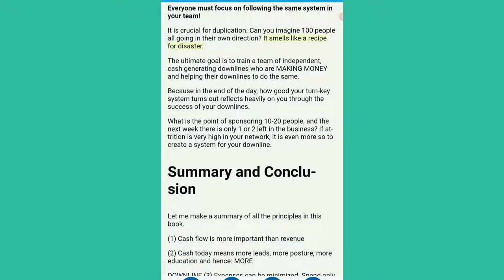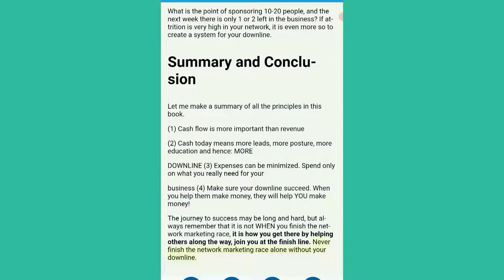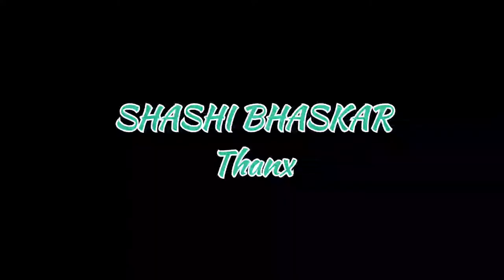Summary and conclusion. Let me make a summary of all the principles in this book. 1. Cash flow is more important than revenue. 2. Cash today means more leads, more posture, more education and hence, more success. 3. Expenses can be minimized — spend only on what you really need for your business. 4. Make sure your downlines succeed. When you help them make money, they will help you make money. The journey to success may be long and hard, but always remember that it is not when you finish the network marketing race — it is how you get there by helping others along the way join you at the finish line. Never finish the network marketing race alone without your downline.